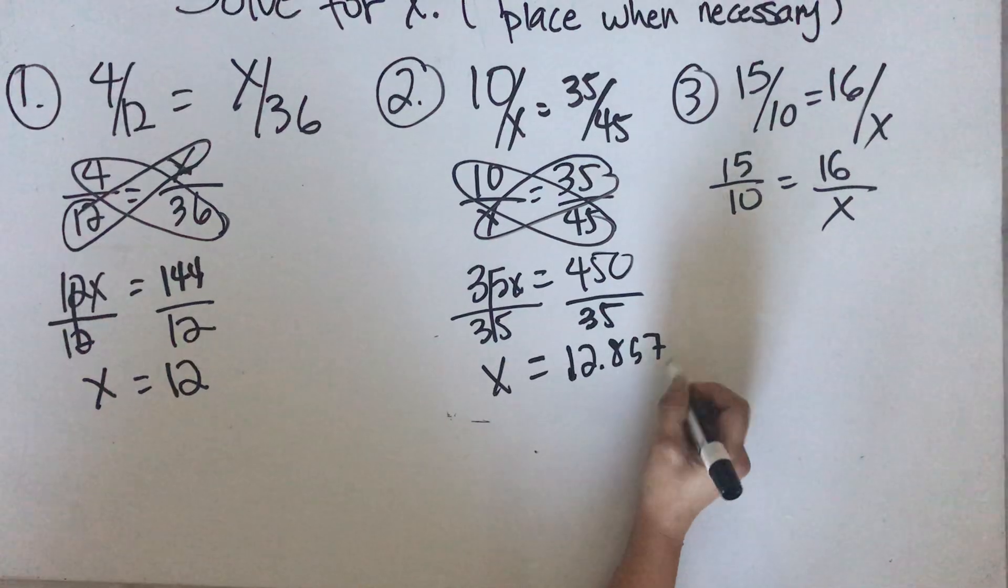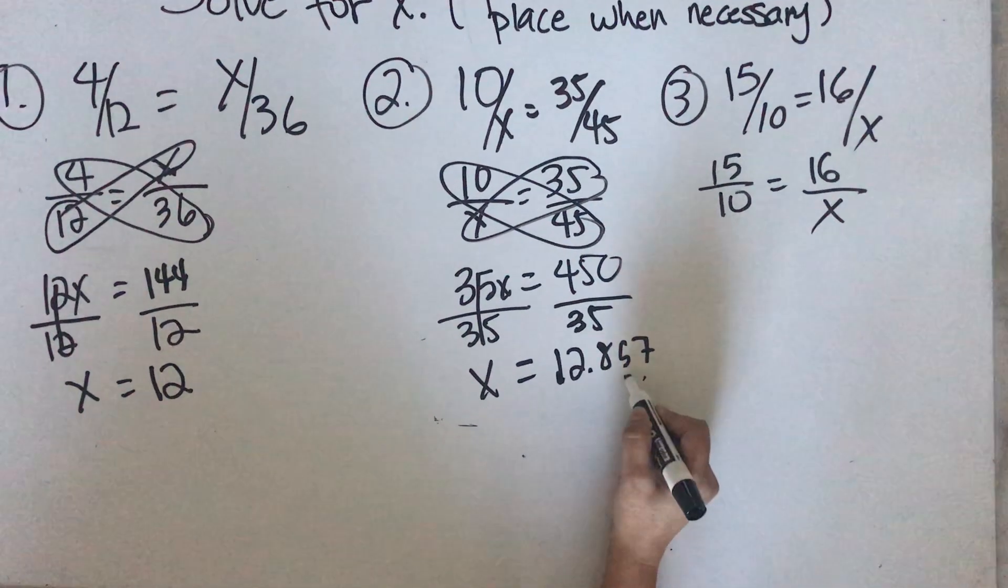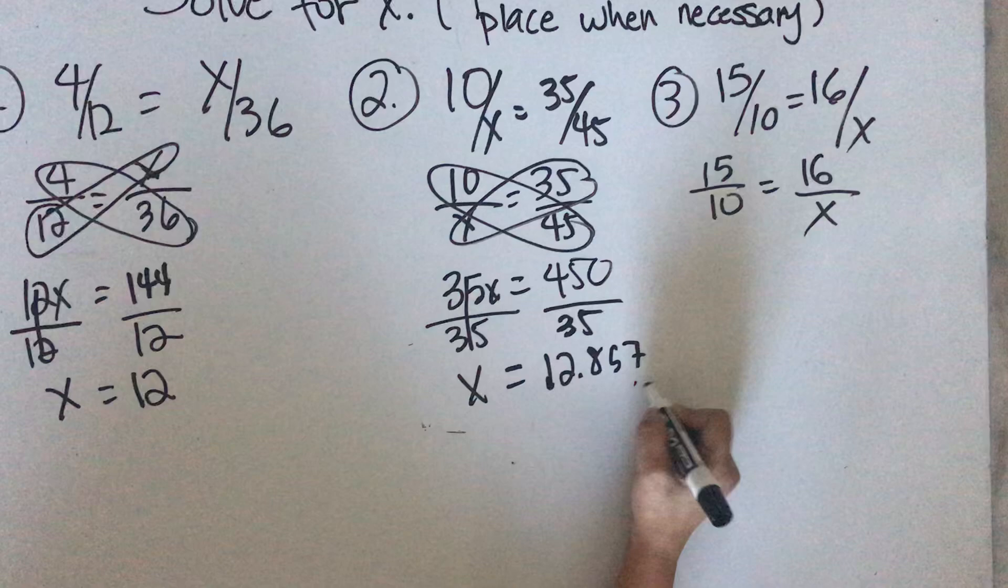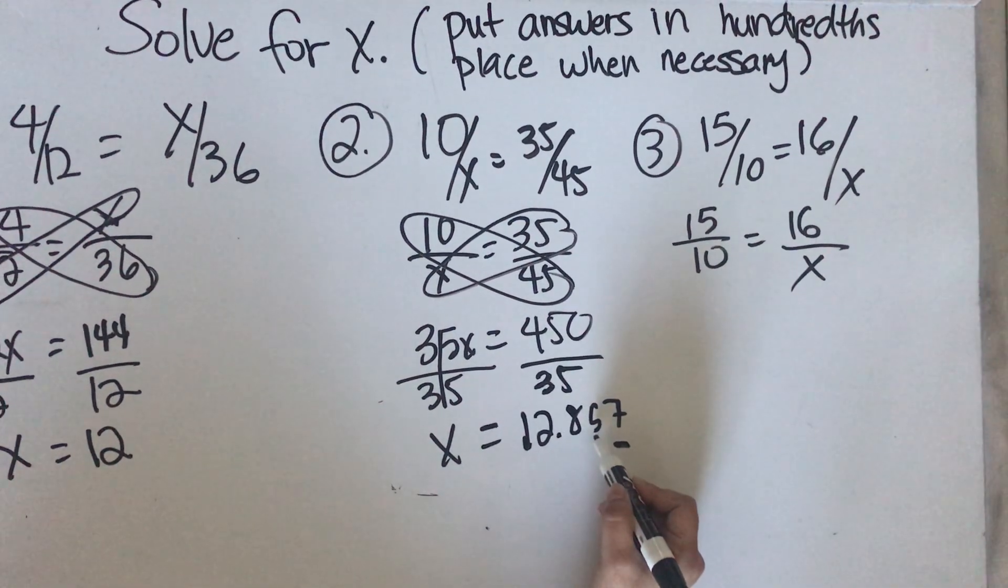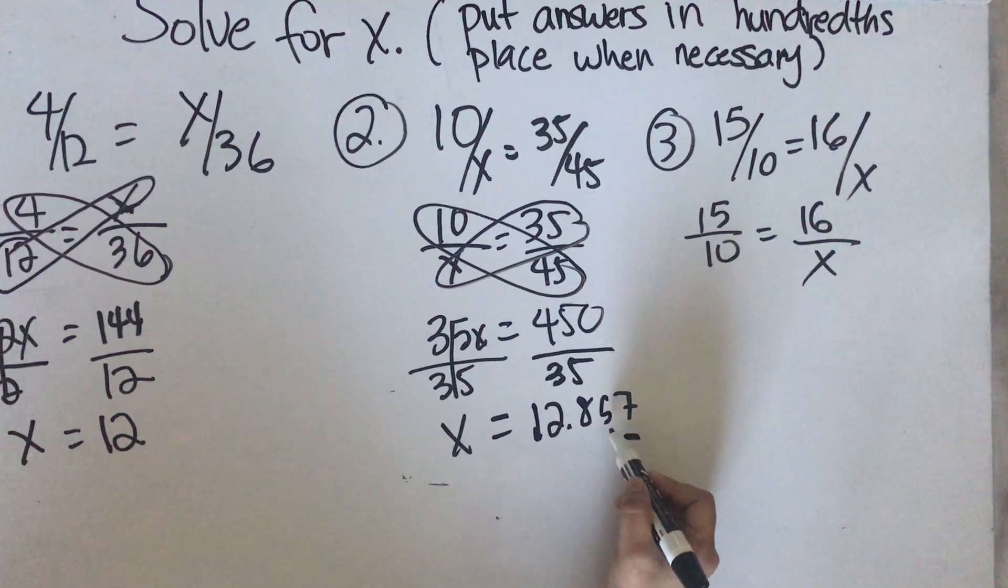So here, this is tenths place, hundredths place and thousandths place. So this neighboring 7 is going to determine if 5 is going to be a 6 or it remains a 5.